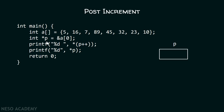Pointer P initially points to the first element of this array A. Let me assume that the base address of this array A is 1000, or the address of the first element of this array is 1000. Therefore, this will get replaced by 1000. And here is the pictorial representation of a pointer P which contains the address 1000.